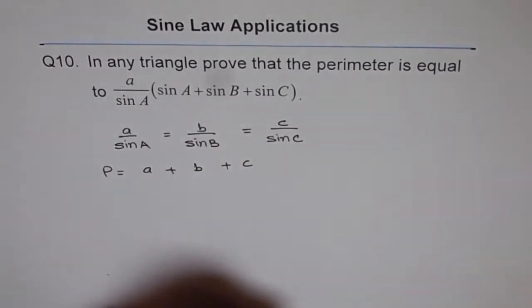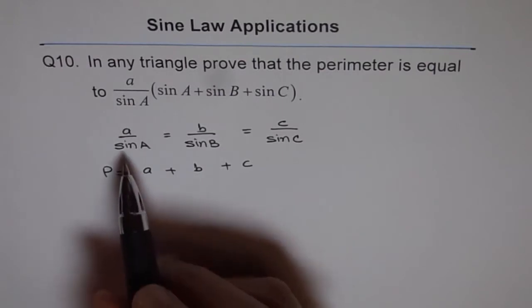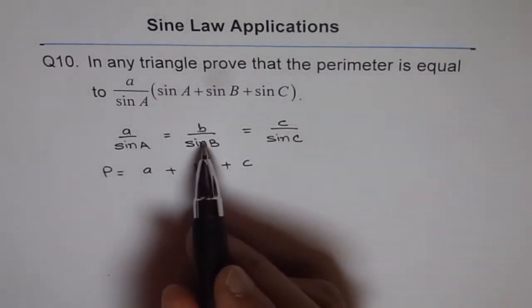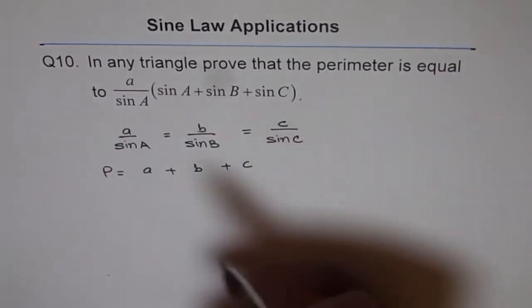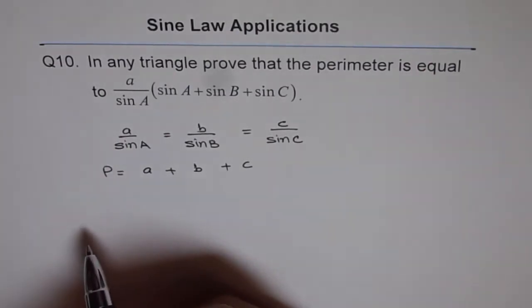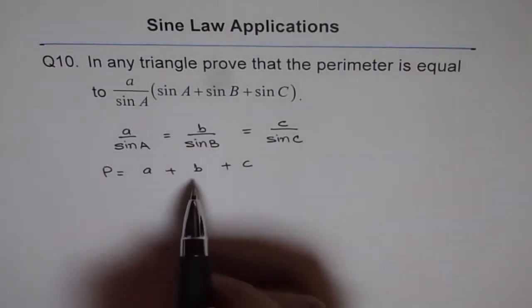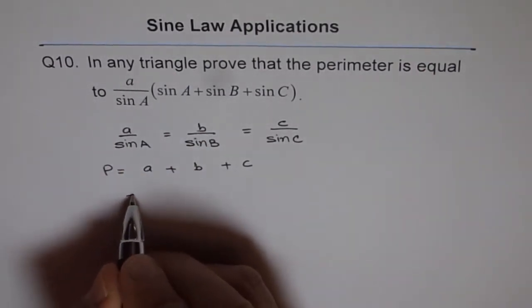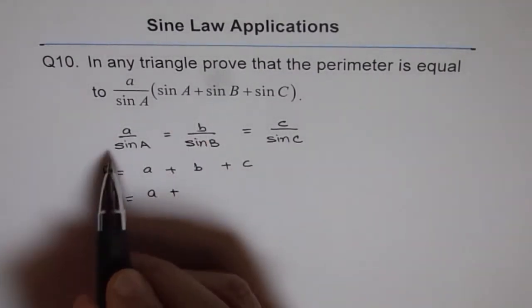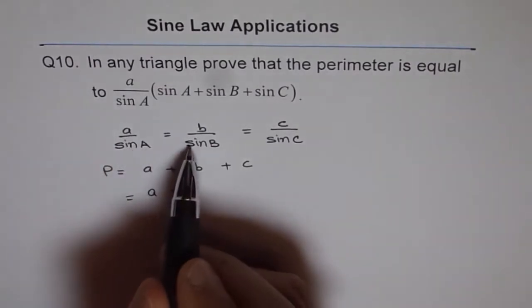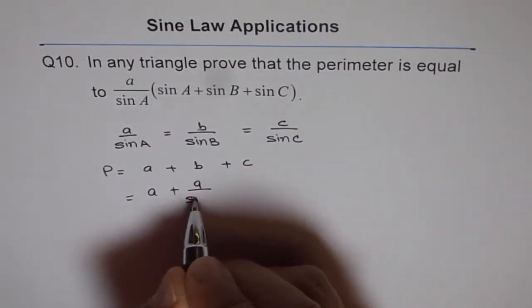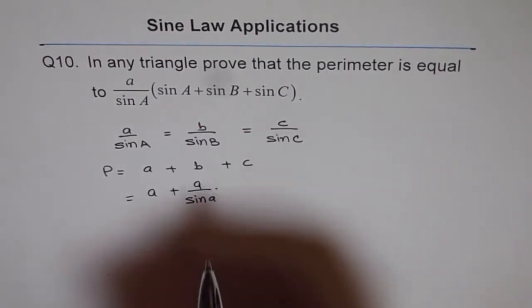Now you can write a, b, and c in terms of one another. So a is a. For example, if you want to write what is b in terms of a and sine A, b will be equal to—we can write this: a is a, plus what is b? I can write b as a over sine A times sine B.